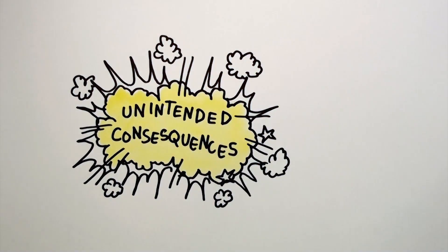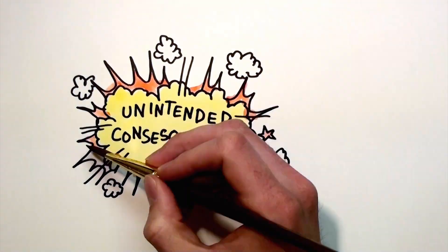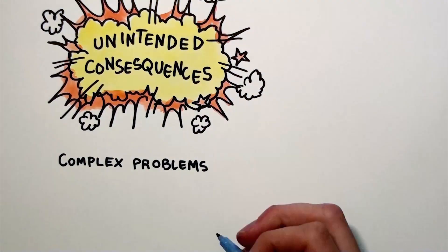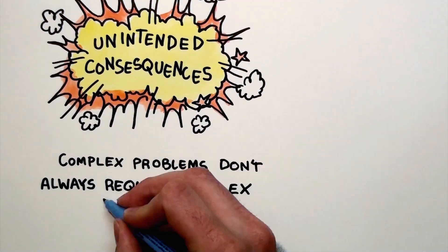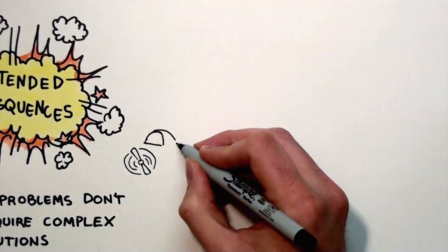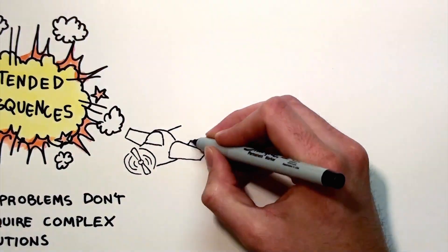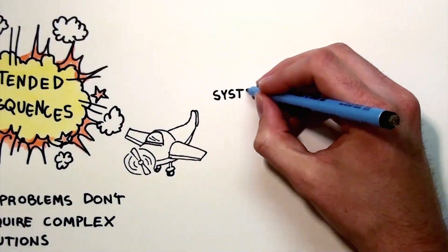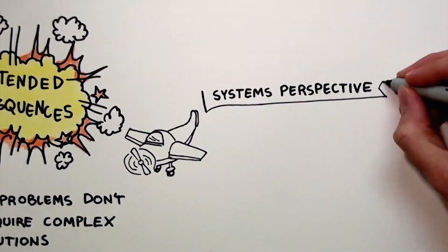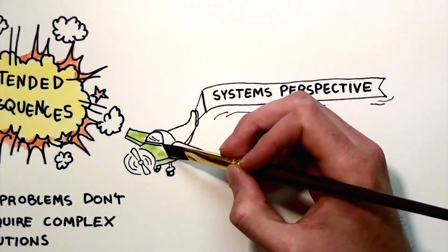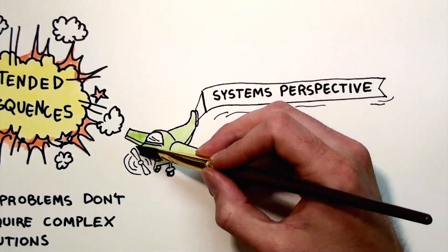Fortunately, complex problems don't always require complex solutions, but we do need to shift the way we think about health and health improvement. We need to adopt a systems perspective to find solutions to these important challenging problems.